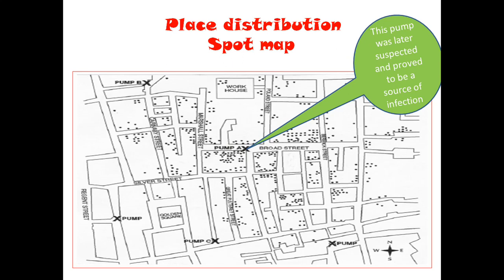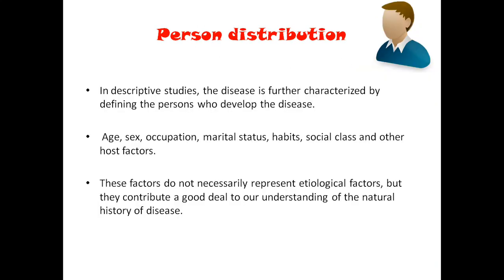The spot map looks like a town map where the black dots are the casualties due to that particular disease. If we do a spot map in a very small area, we will get to know a better picture of the disease distribution. That was all about place. We have seen time and place. The next one is person distribution.